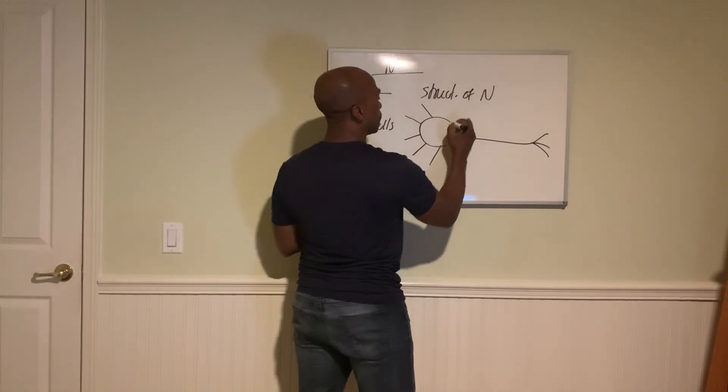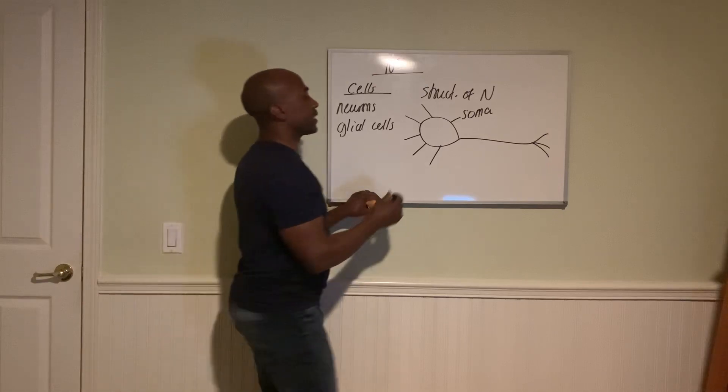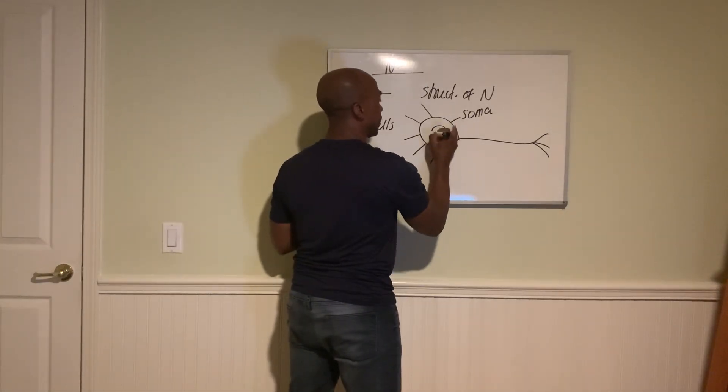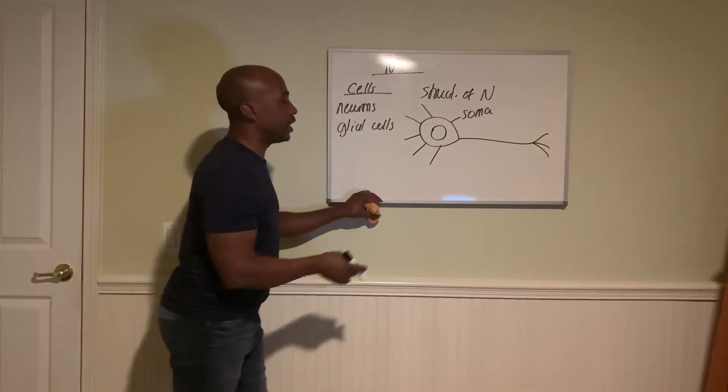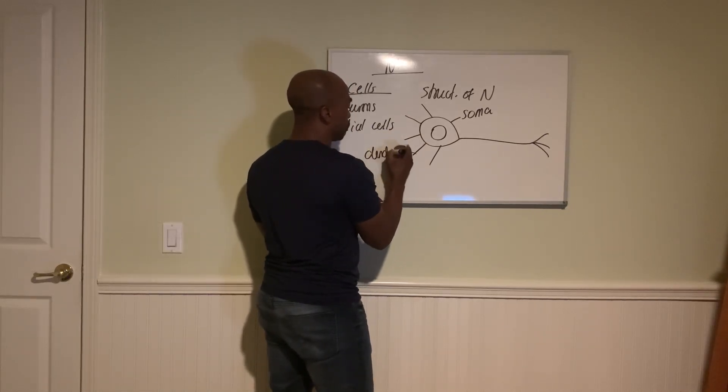Okay, so this is the soma. We call it the cell body; that's where you find the cell nucleus inside here. And then we have these antenna-like things called dendrites. These are the receptive areas of the neuron.